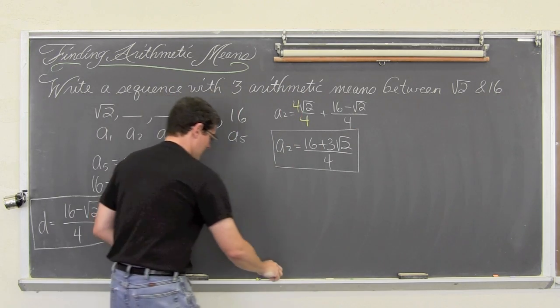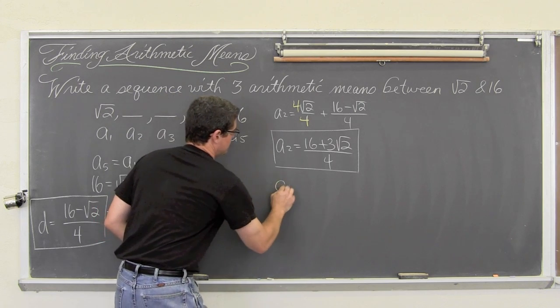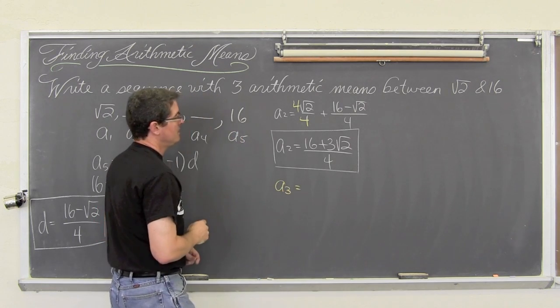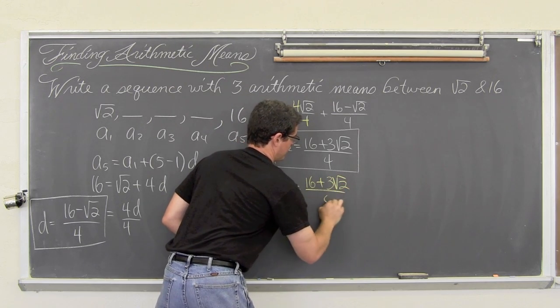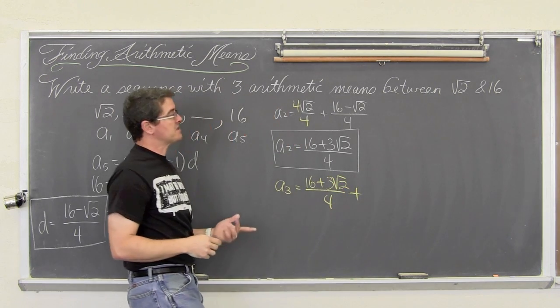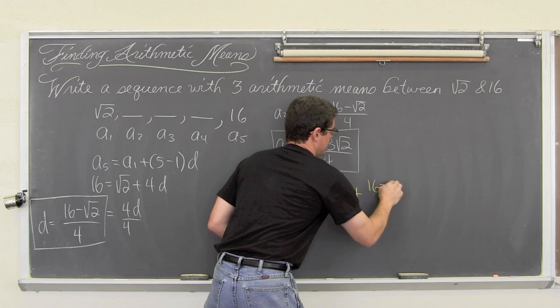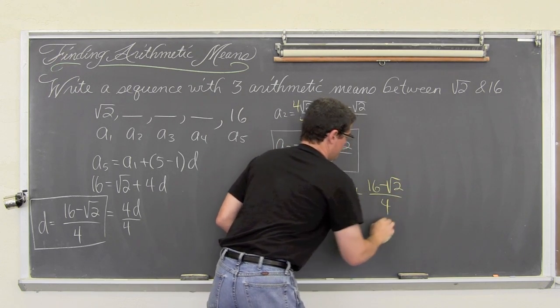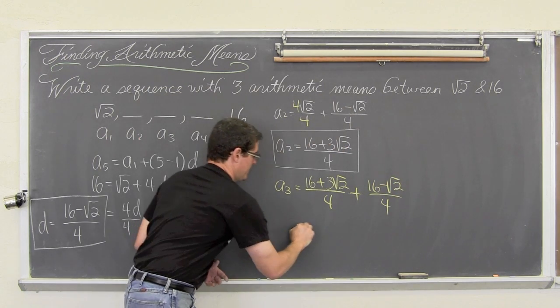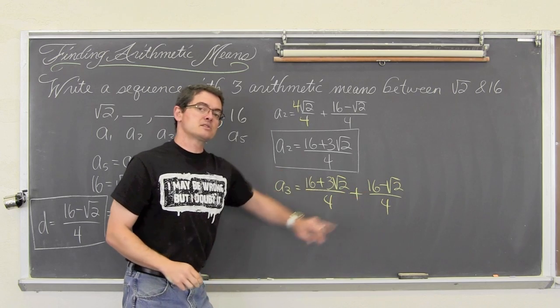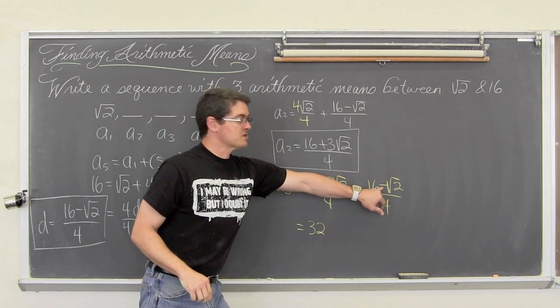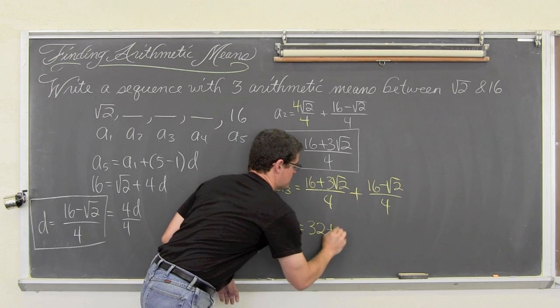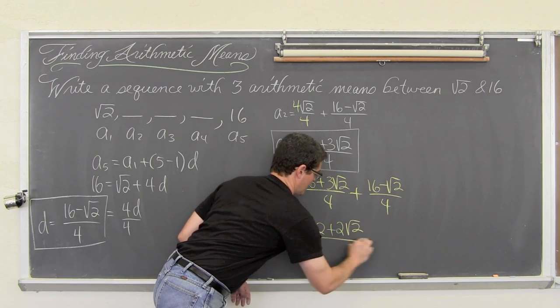Now a sub 3 is going to be a sub 2 plus our common difference again of 16 minus square root of 2 over 4. Now add like terms, we get 16 and 16 is 32. 3 minus 1 is 2, so plus 2 square root of 2 over 4.